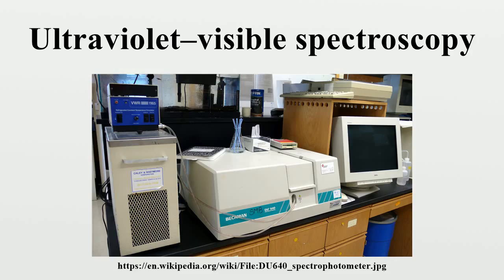The radiation source is often a tungsten filament, a deuterium arc lamp which is continuous over the ultraviolet region, a xenon arc lamp which is continuous from 160 to 2,000 nanometers, or more recently light-emitting diodes for the visible wavelengths. The detector is typically a photomultiplier tube, a photodiode, a photodiode array, or a charge-coupled device. Single photodiode detectors and photomultiplier tubes are used with scanning monochromators, which filter the light so that only light of a single wavelength reaches the detector at one time. The scanning monochromator moves the diffraction grating to step through each wavelength so that its intensity may be measured as a function of wavelength. Fixed monochromators are used with CCDs and photodiode arrays.